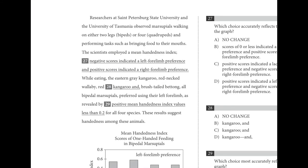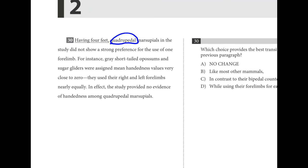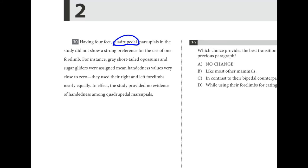For number thirty, we go back to the previous paragraph. In that paragraph we're talking about bipedal marsupials — those with two legs. In the next paragraph, we're talking about quadrupedal ones — four legs. We want to emphasize the contrast, so C is the best choice because it shows how these are different.